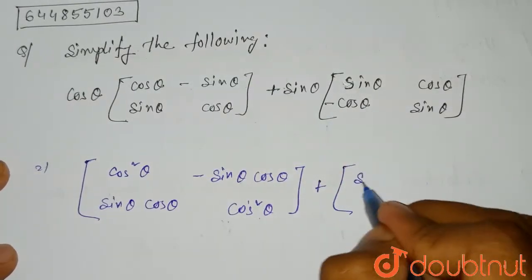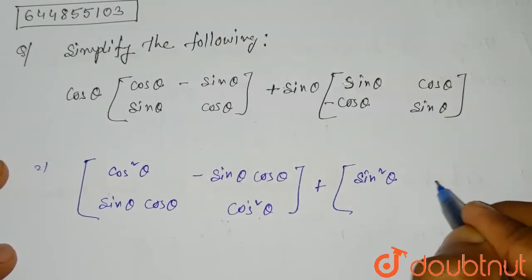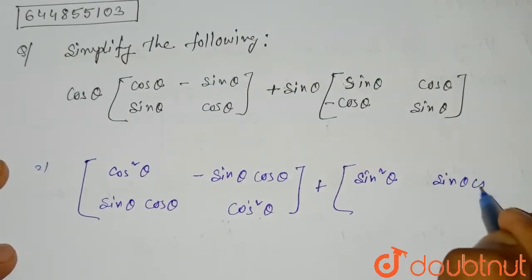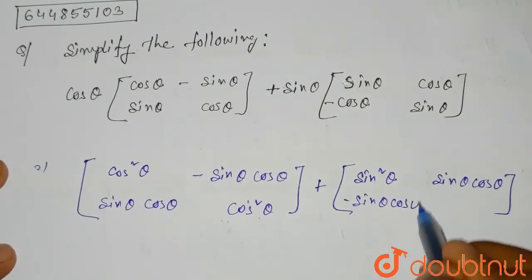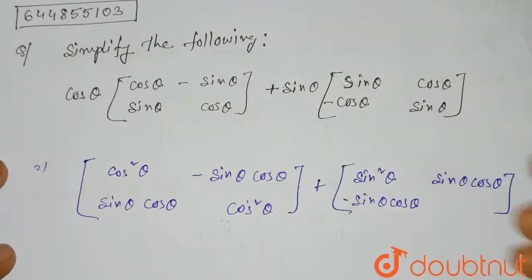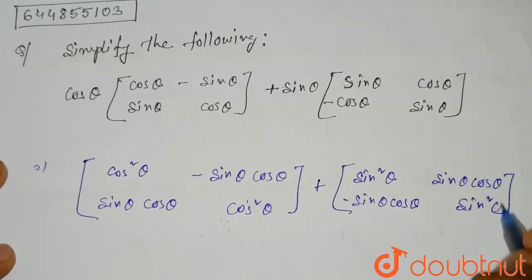Plus, similarly with sin theta also. So it will be sin square theta, sin theta cos theta, sin theta cos theta, and here it will be minus sin theta cos theta, and then sin square theta.